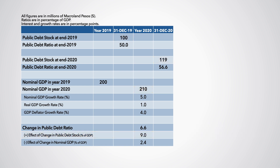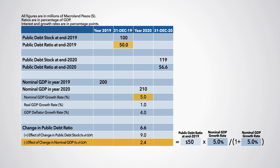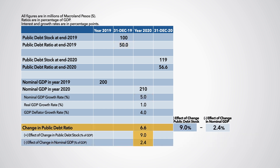Second, the effect of the change in nominal GDP, which can be computed as the 2019 debt ratio multiplied by the 2020 growth rate of nominal GDP and divided by 1 plus this growth rate. This effect of the change in nominal GDP pushes the debt ratio down by 2.4 percentage points.